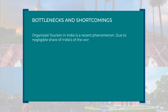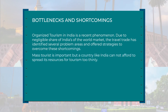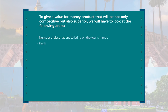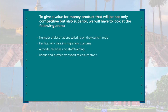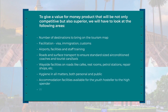To sum up the bottlenecks and shortcomings: organized tourism is a recent phenomenon in India due to negligible share of the world market. The travel trade has identified several problem areas. Mass tourism is important, but a country like India cannot afford to spread its resources too thinly. We will have to increase the number of destinations on the tourism map; develop facilitations like visa, immigration, and customs; improve airports, facilities, and staff training; ensure standard-size air-conditioned coaches and tourist cars on roads; develop wayside facilities like cafes, restrooms, and petrol stations; and ensure hygiene in all matters — both personal and public.